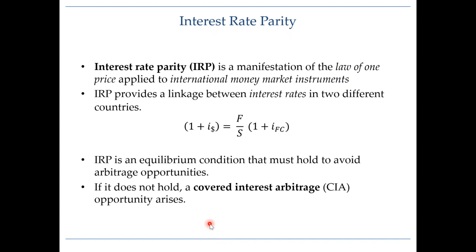Let's take a look at another covered interest arbitrage example. Quick reminder that a covered interest arbitrage opportunity arises when interest rate parity does not hold. Interest rate parity is an international parity relationship that must hold to avoid arbitrage opportunities, and the equation here provides the linkage between interest rates in two countries.